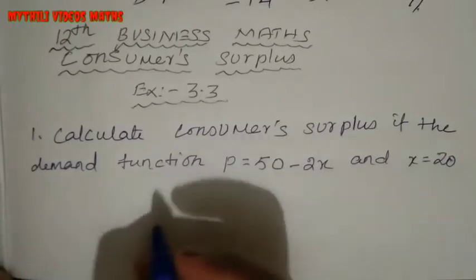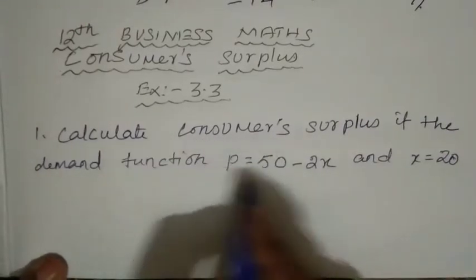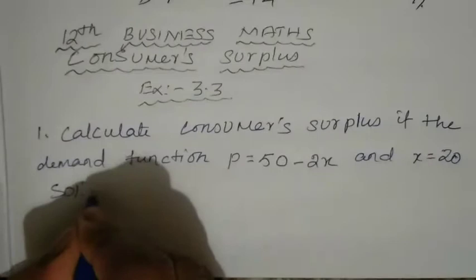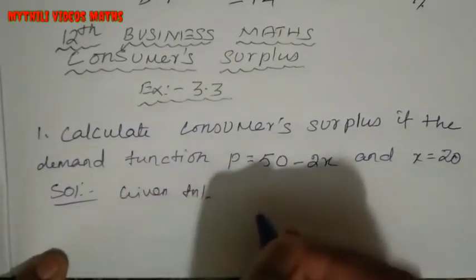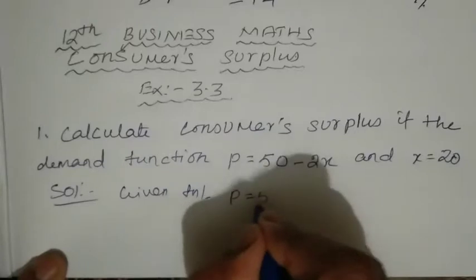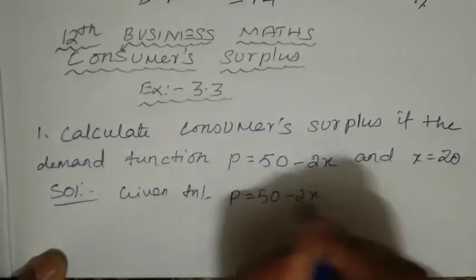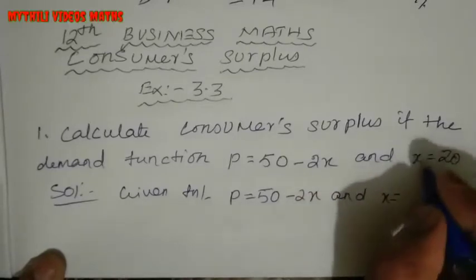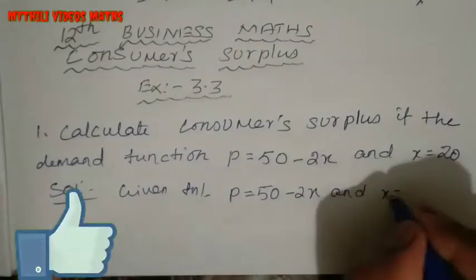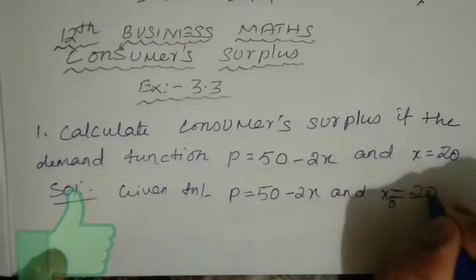First, write the given function. Given function P equals 50 minus 2x, and x₀ equals 20.